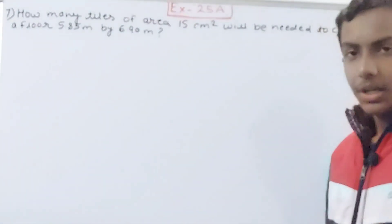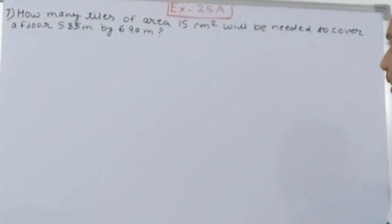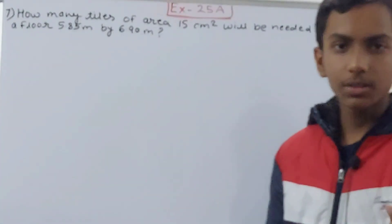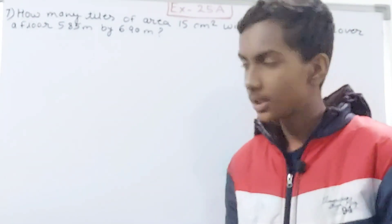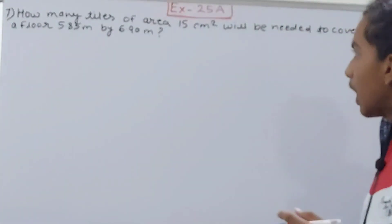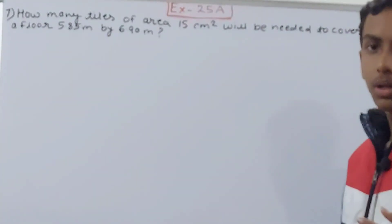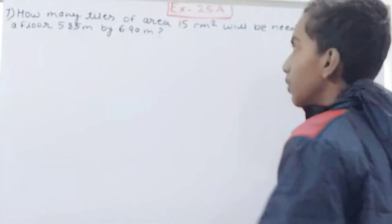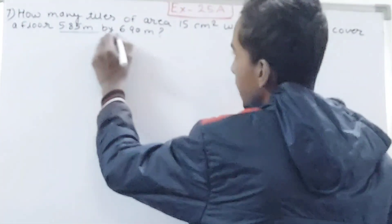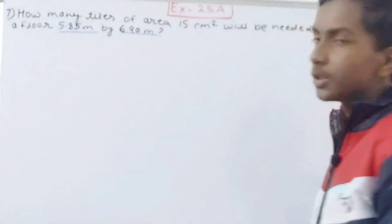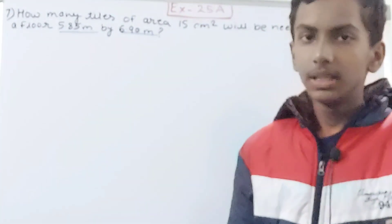Basically it is saying that there are tiles, and each tile is in a square shape with an area of 15 square centimeters. It asks how many tiles we need to cover a floor, and the dimensions of the floor are 5.85 meters by 6.90 meters. So we have to calculate the number of tiles.